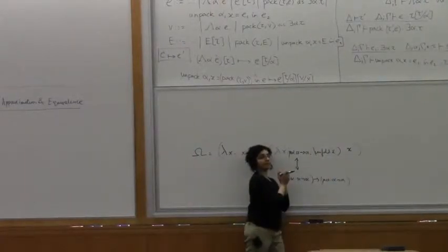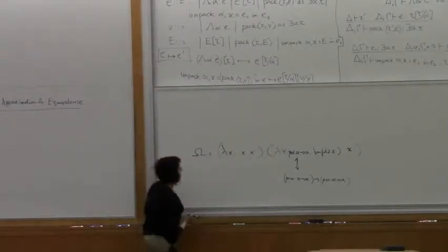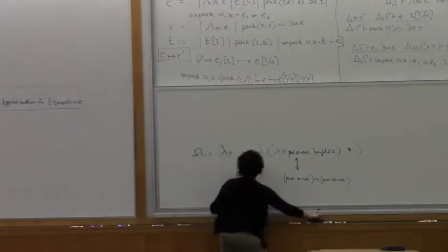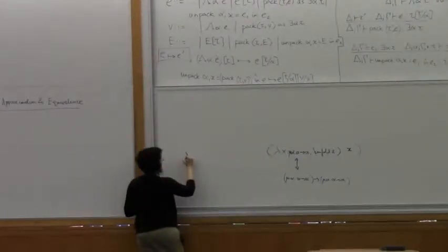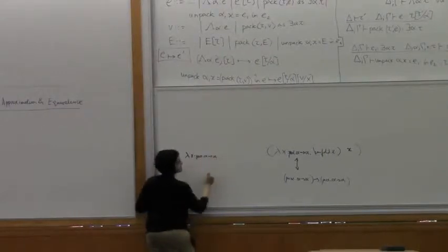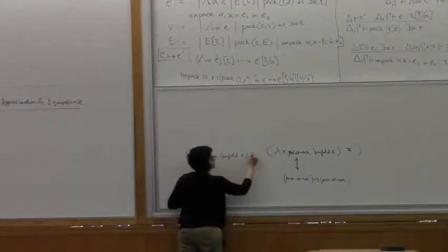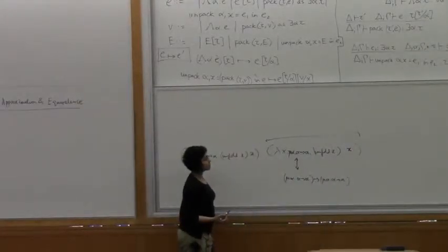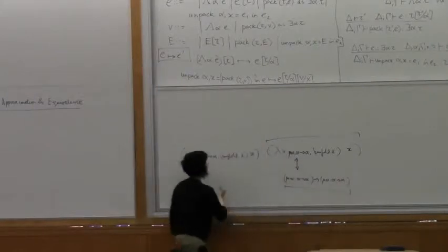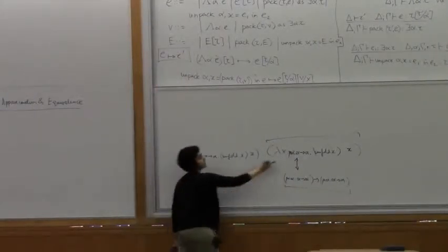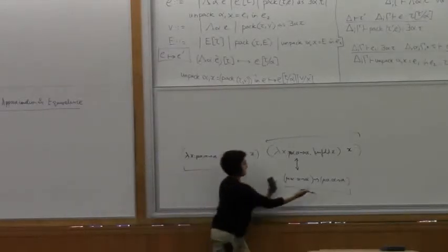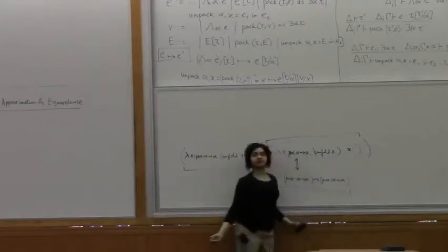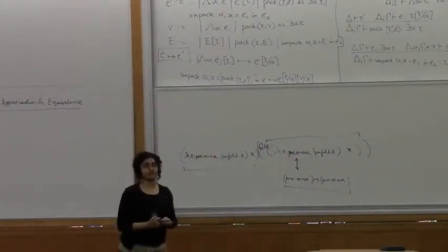So X has a recursive type nu alpha (alpha → alpha). The problem is that X applied to X won't directly type-check. Instead, we unfold X in the function position before applying it to the argument X. Once we unfold, we have the right function type, and X has the right argument type. On the other side, we write lambda x : nu alpha (alpha → alpha). (unfold x) x. We need to add a fold before passing the whole term in as an argument, and then we can diverge in this language.